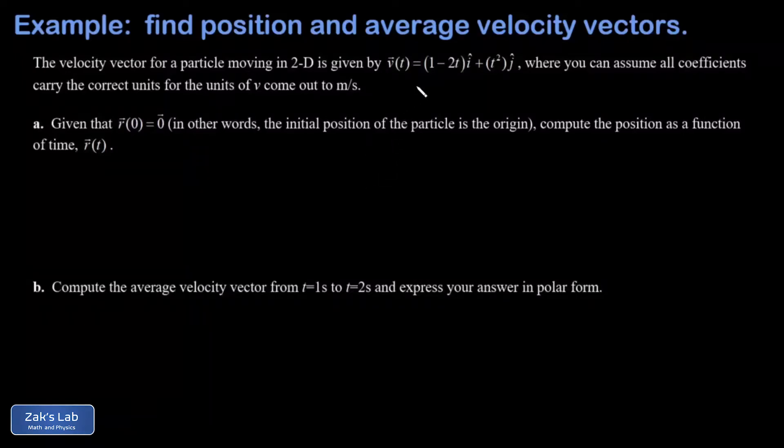In this problem we're given a velocity vector for some particle moving in two dimensions, and that's given in the standard i hat j hat notation. We're told you can assume all the coefficients carry the correct units on that, so that v comes out in meters per second.